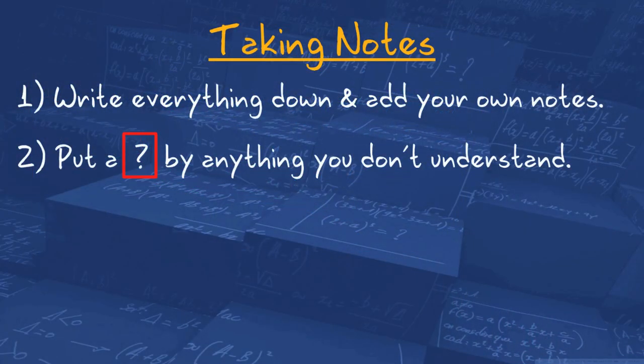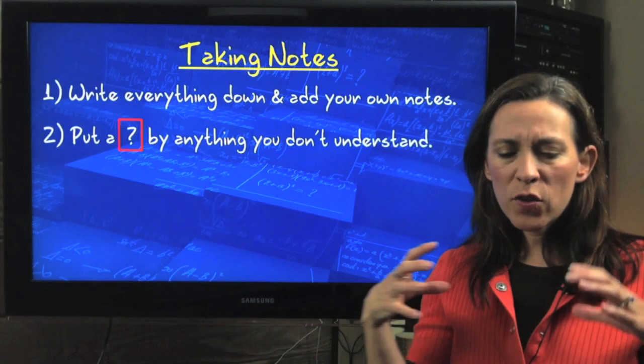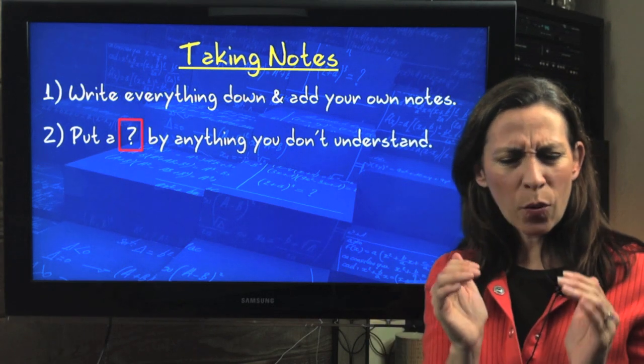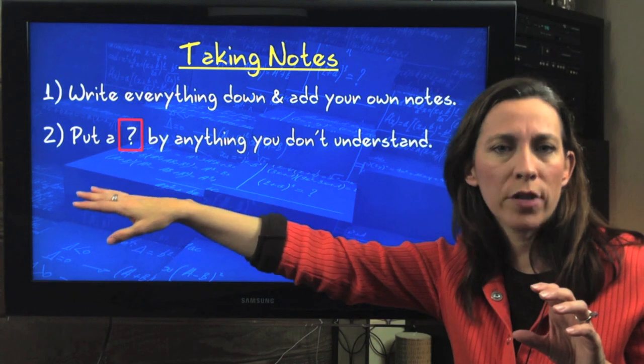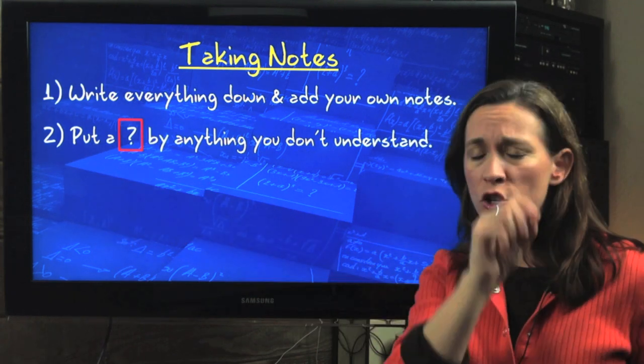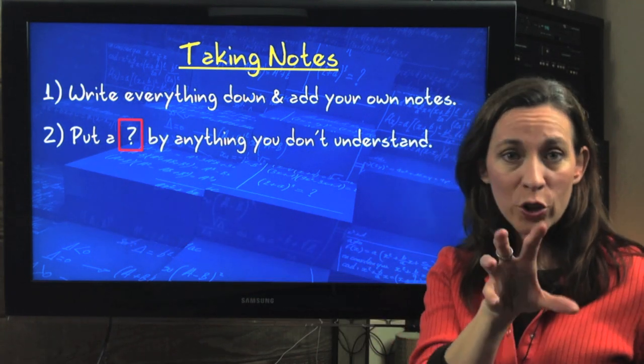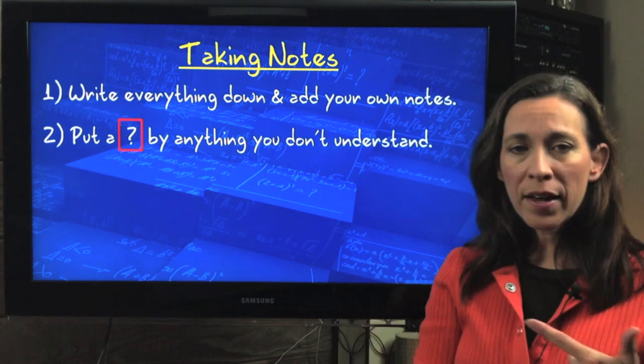Also, sometimes your teacher might go a little fast if they're running out of time. So don't feel like, oh, you're behind. I don't get it. Just put a question mark and keep going. If you sit there and try to figure out, okay, now wait, how did they get here? I don't understand this step and they're three boards down now and you're behind. So write a quick question mark where you got lost and then pick up after that.